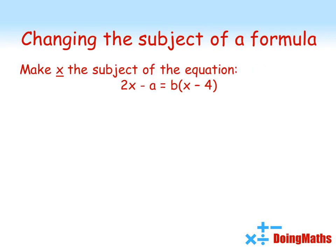One last one now, a little bit trickier. We're going to make X the subject of the equation 2X minus A equals B times open brackets X minus 4. So we've got X in two different places of this equation. First thing, just to make everything easier to deal with, let's get the X out of that bracket on the right hand side by multiplying out. So 2X minus A equals the expanded BX minus 4B.